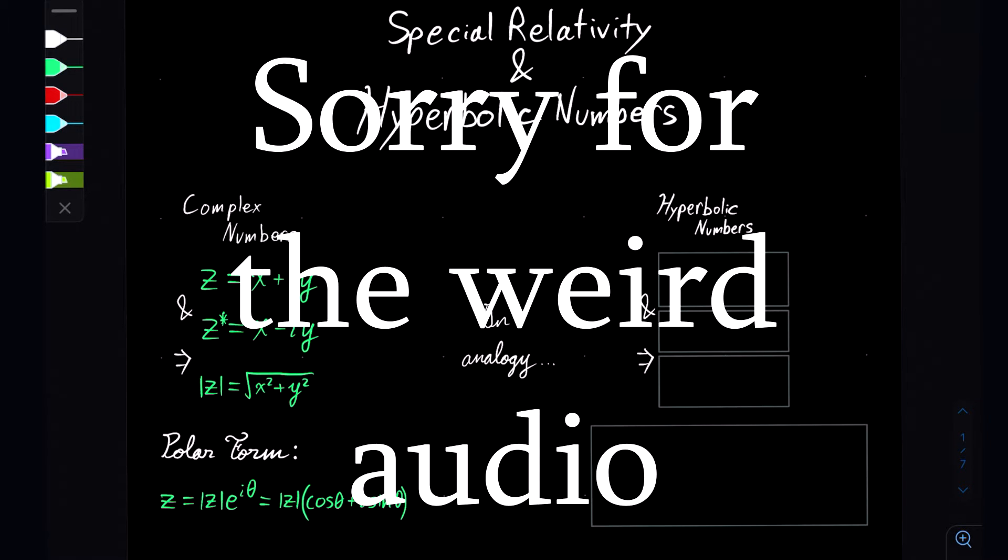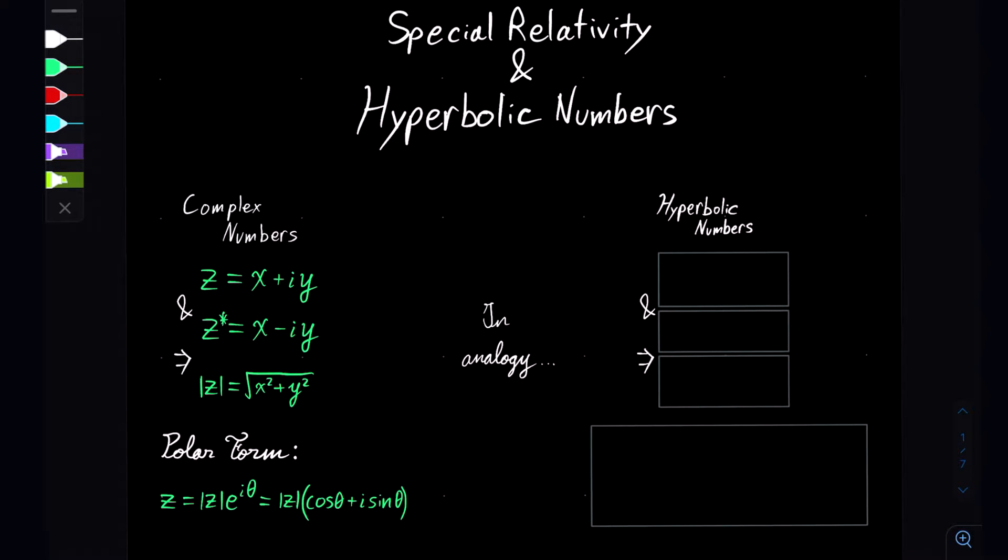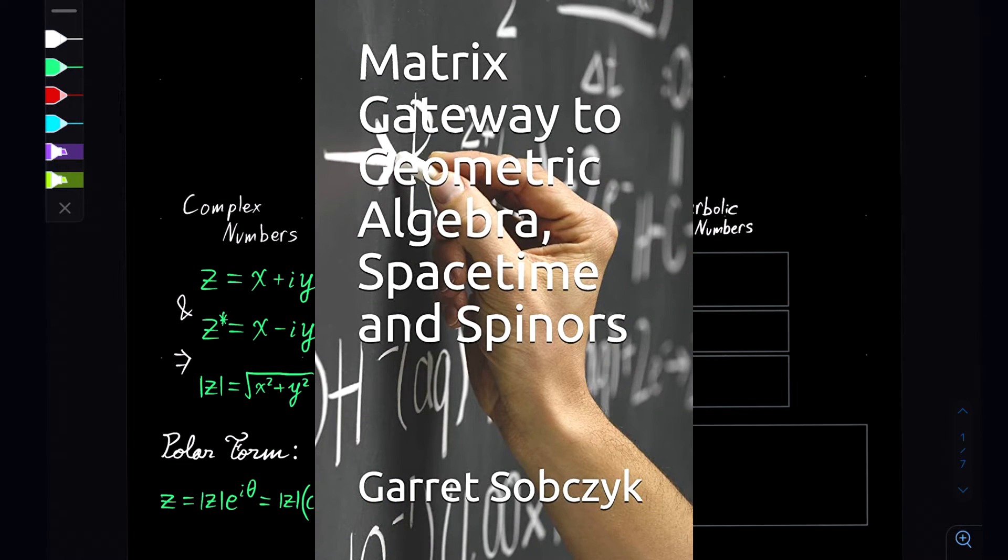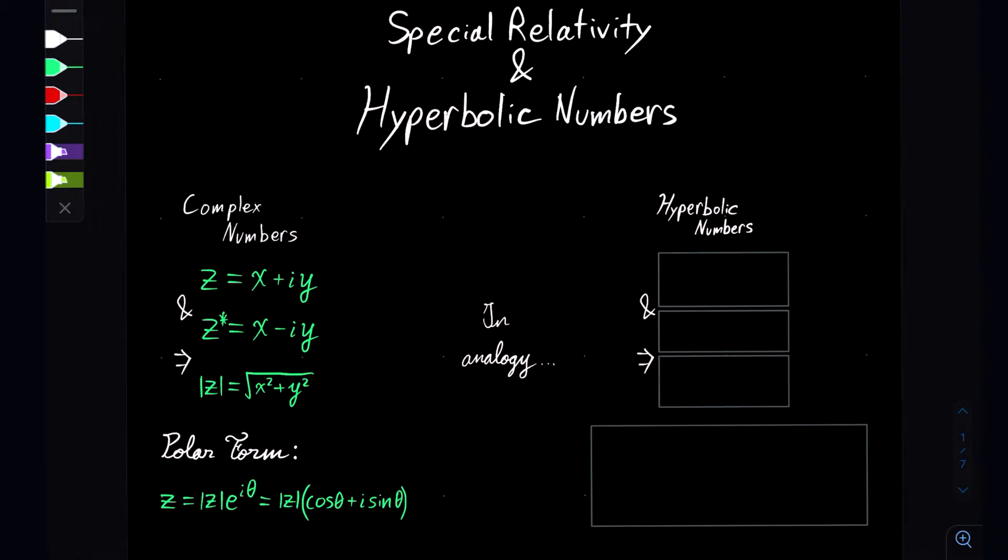Welcome to another eccentric video. This is a quick introduction into the use of hyperbolic numbers and special relativity. For a greater understanding on this subject than this video can give, I recommend that you read Gerrit Sobciuk's Matrix Gateway to Geometric Algebra, Spacetime, and Spinors. I'll also provide these notes as a download, so check the video's description for that link.